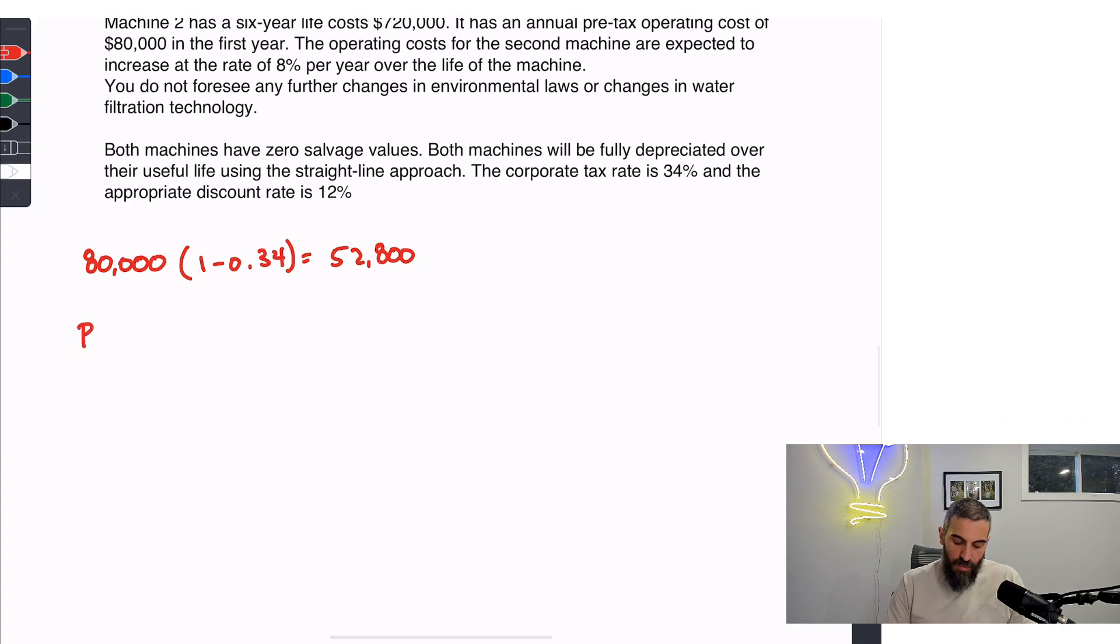So the present value would be $52,800 divided by the discount rate minus the growth rate, which is now 8%, to the power of six, because this one has a six-year life. So we get a present value of $258,772.90.